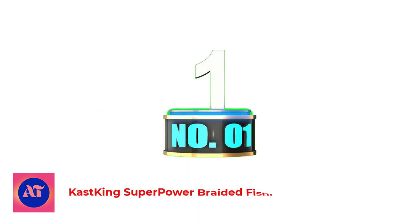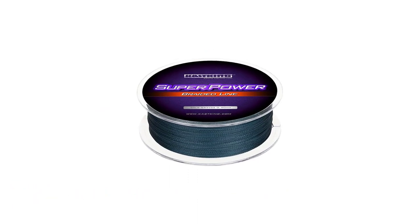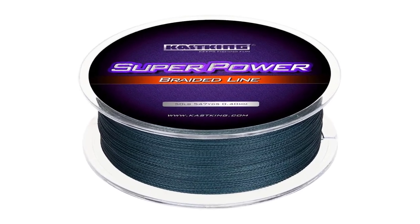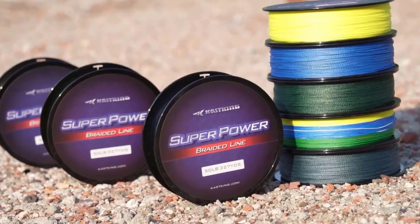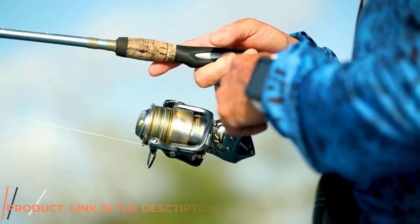Number 1. Casking Superpower Braided Fishing Line. The Casking braided fishing line is a must-have among avid anglers. With incredible strength, zero stretch, and ultra-high sensitivity, this is the best fishing line for spinning reels when fishing in murky waters.